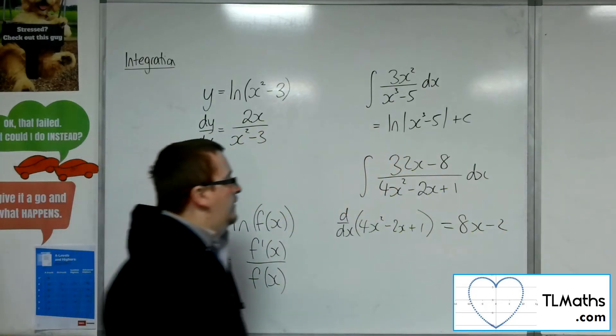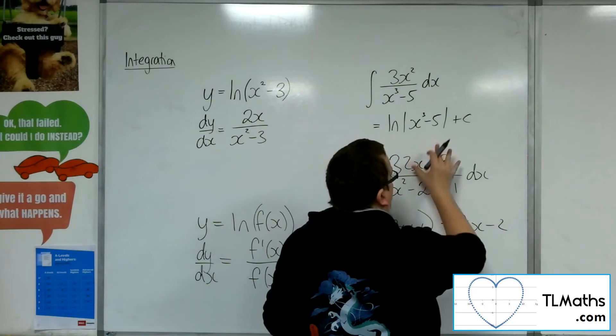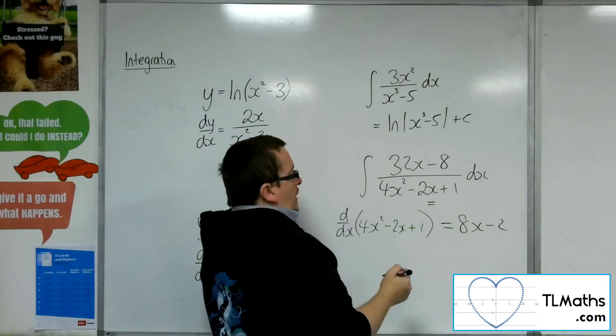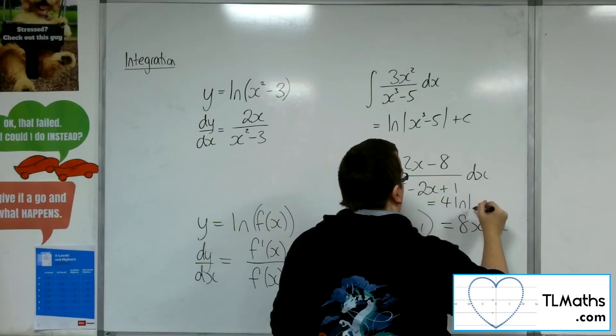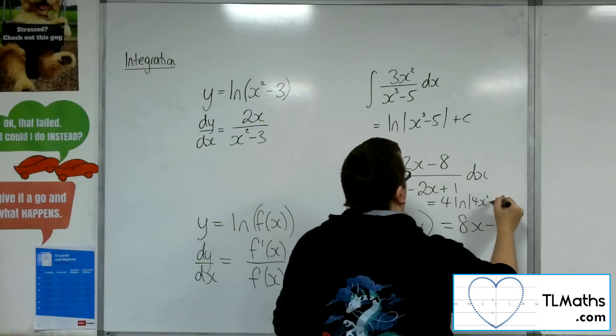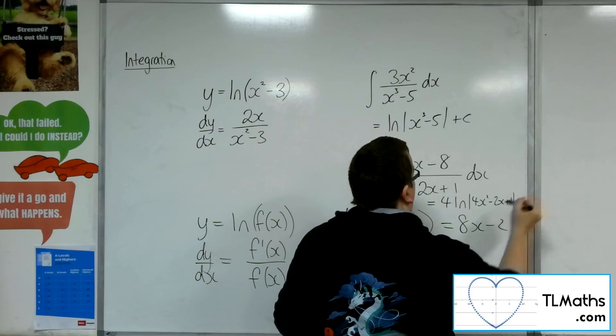Yes it is. This is 4 lots of 8x minus 2. So this must be 4 lots of log of 4x squared minus 2x plus 1 plus c.